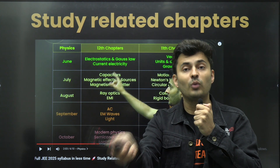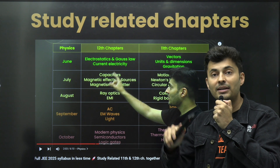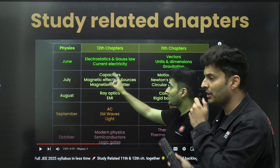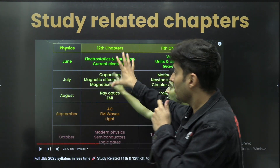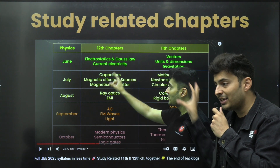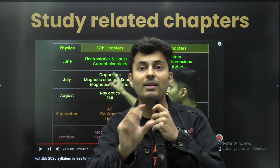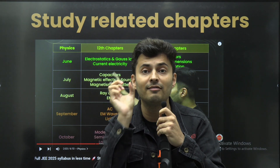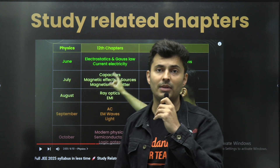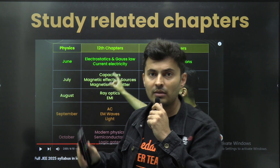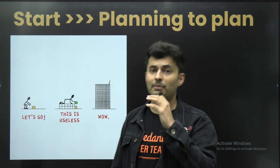What you should be doing is saving time by efficiently covering the chapters. I made a separate video — it will come up in the i-cards on top — where I have given a complete list of which chapters you can study from 11th and 12th together. You can effectively complete the entire syllabus in very little time, and I've given it not just for physics but also for chemistry and mathematics. Watch that video — the link is in the i-card.